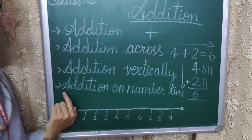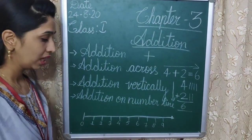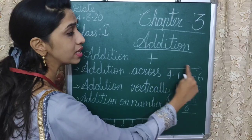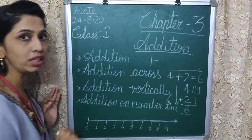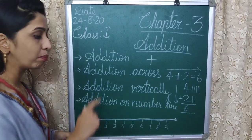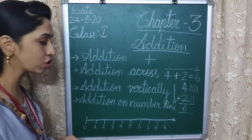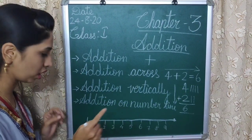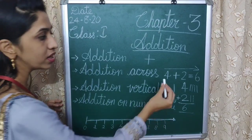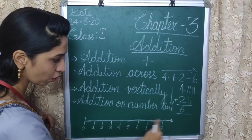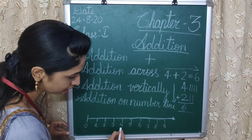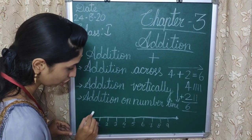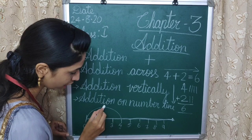Next, we have learned addition on a number line. This is the number line. We will add using the same numbers on the number line. Before adding, keep in mind that we always have to start with 0. The first number is 4, so jump 4 places forward from 0 to 4, using an arrow mark.